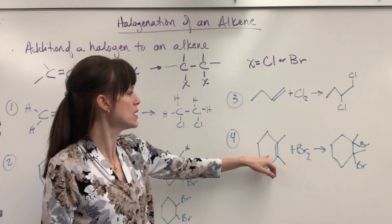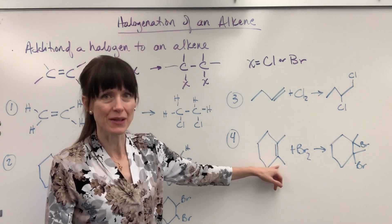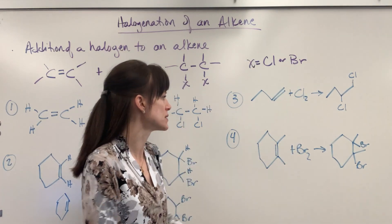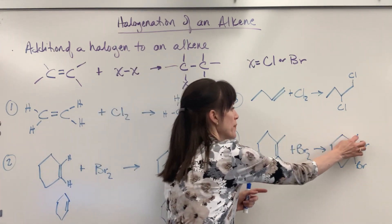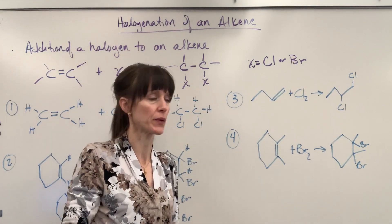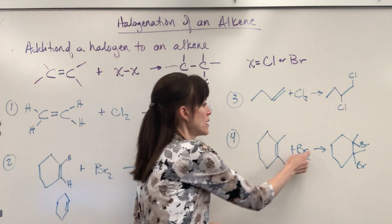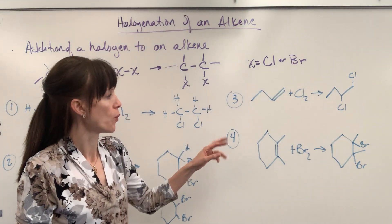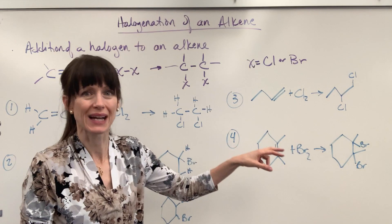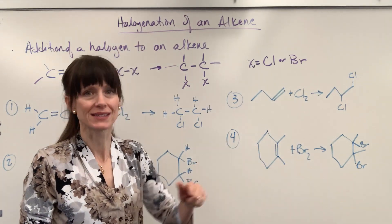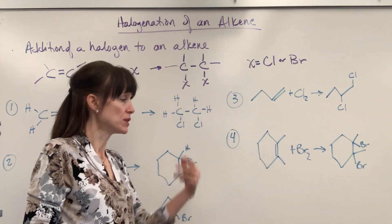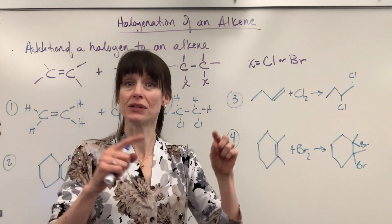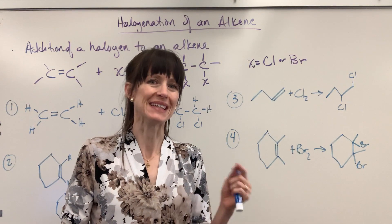With this one we have a 1,2-dimethylcyclohexene. We add the bromine to it, so that double bond's gone. You still have the methyl group — we just replace that double bond with a bromine right there. So you're going to have 1,2-dibromo-1,2-dimethylcyclohexane. There you have it: you remove that double bond and the halogen is going to attach to each carbon that was in the double bond.